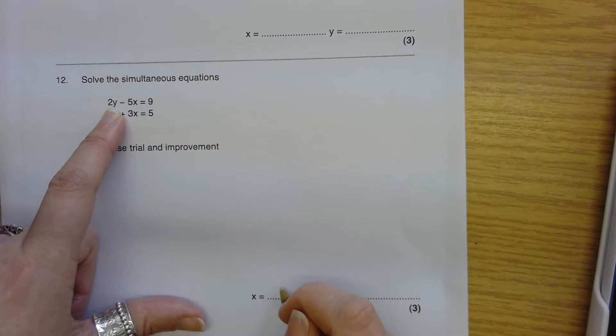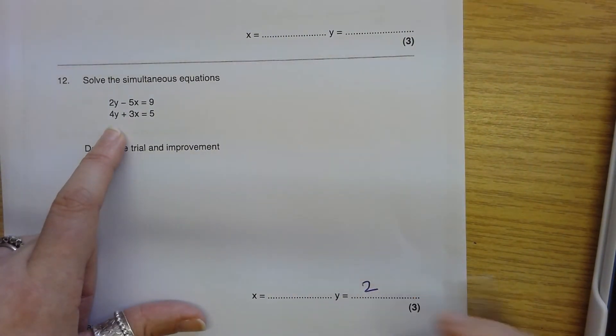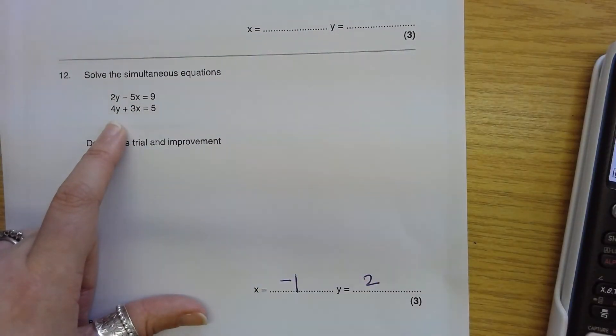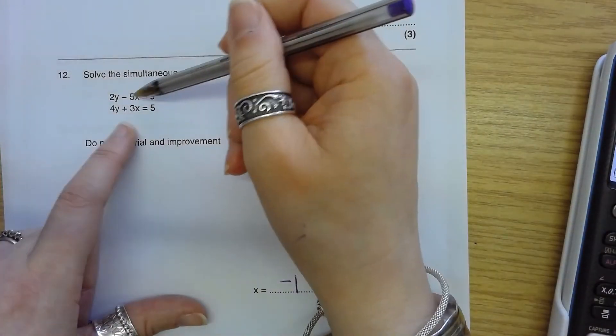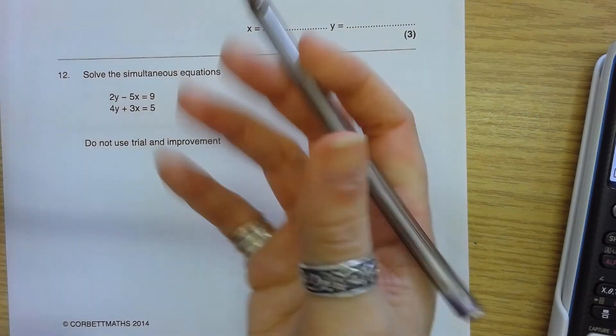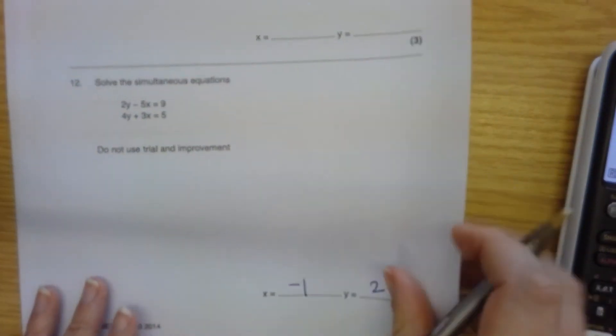So it would be that Y is 2 and X is negative 1. So it can be tricky when it's the same letters in a different order. If you've got more confident mathematicians, you might get them to rearrange. But they may not need to do that.